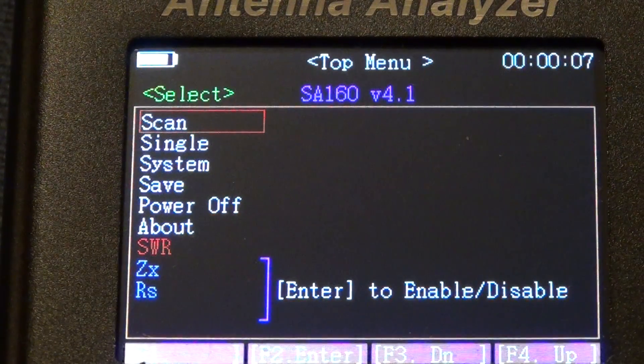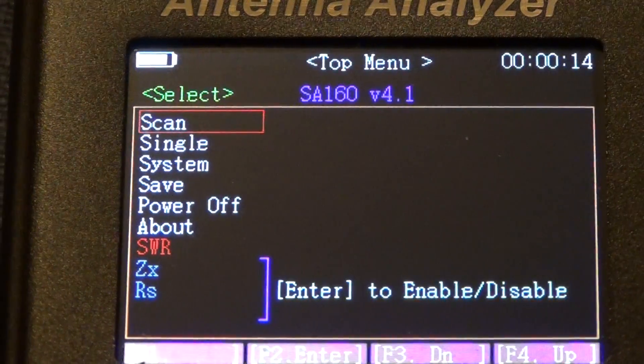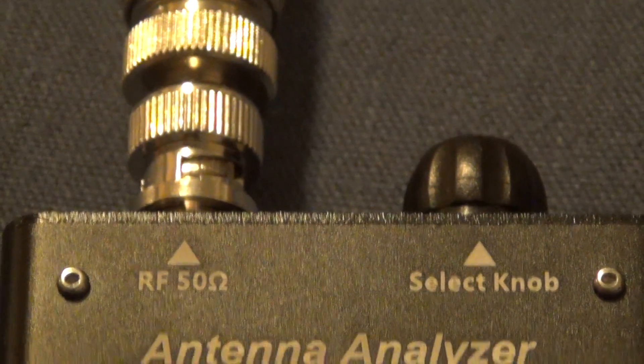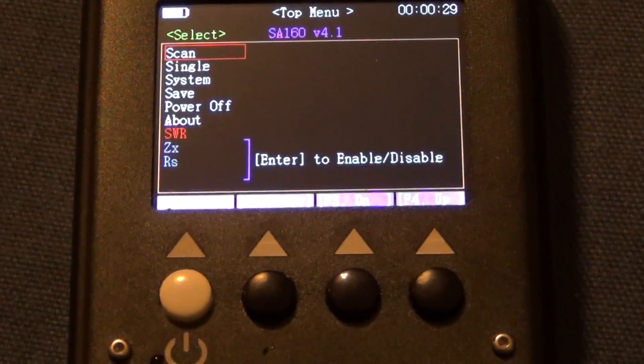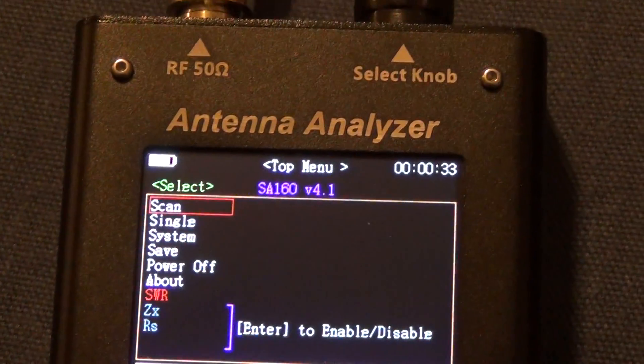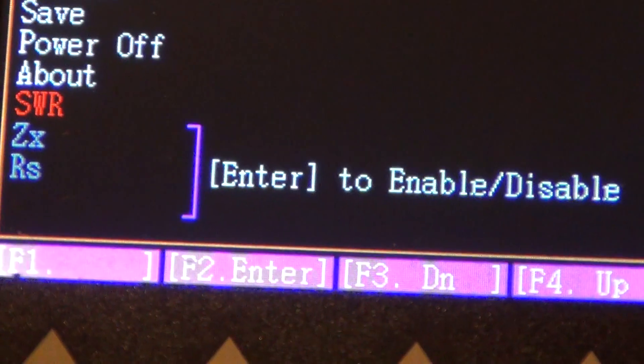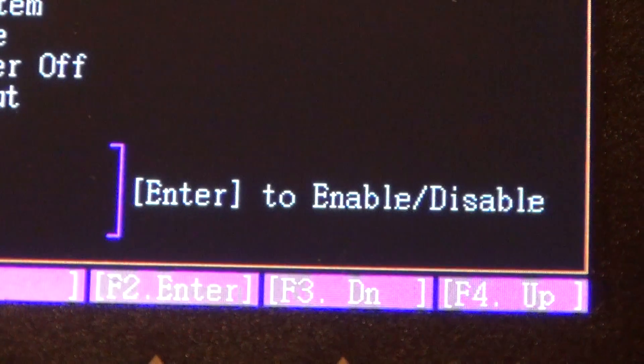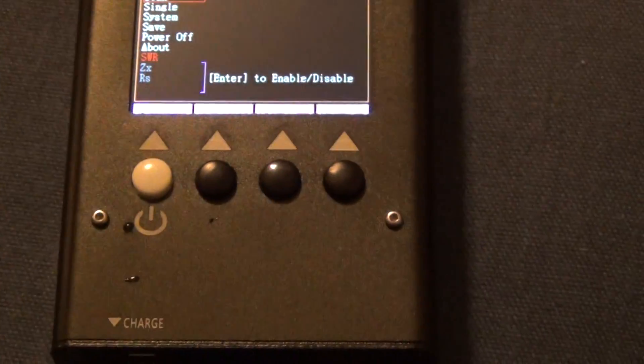So you can see SA160 version 4.1. I have a few functions here. Let me just scroll down. You can use the knob that is on the top here, or you can use those function buttons. It's tough to read against the background. Let me try my best here folks. The first one is F1, second one is Enter, third one is Down, fourth one is Up. You can see those buttons change depending on the function, and those are the push buttons relating to the functionality there.